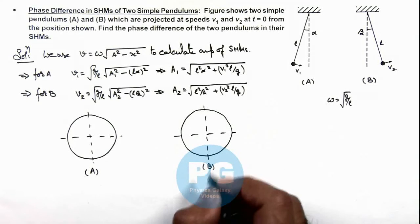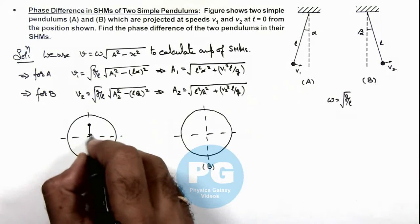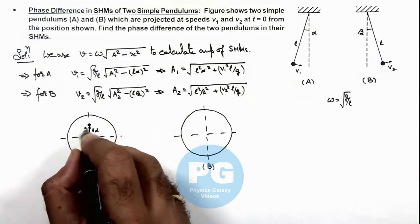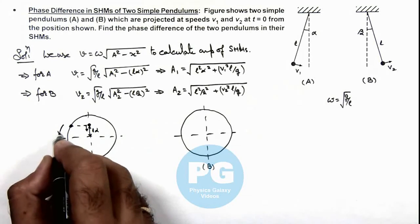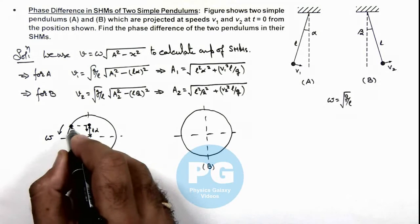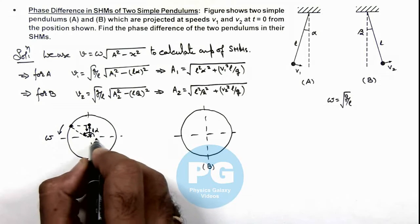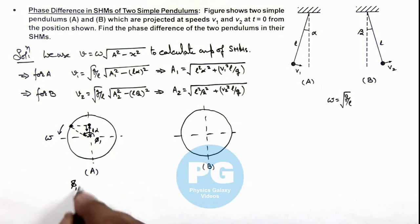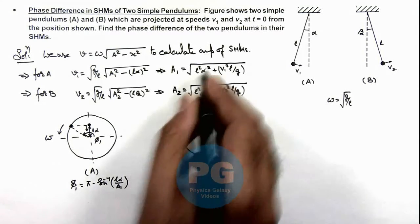Now in this situation, the first particle is moving toward mean position and located at a distance l·α. As it is coming down, its reference particle can be taken on the left hand side going in this direction at angular speed ω. So we can say its initial phase angle is φ₁, and the value of φ₁ is π - sin⁻¹(l·α/A₁). A₁ we already calculated.